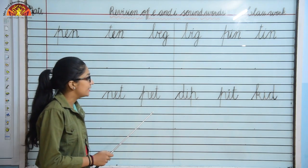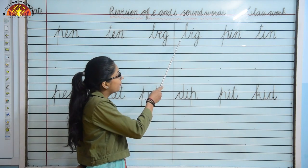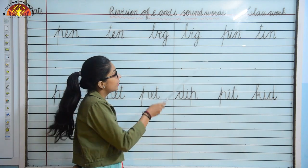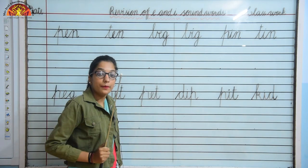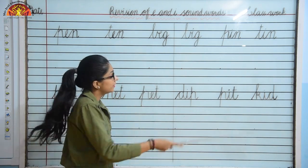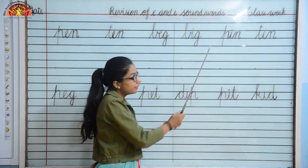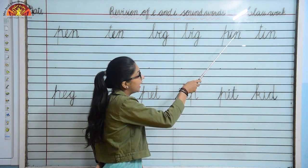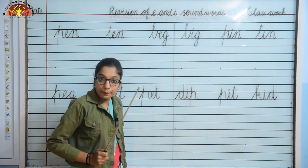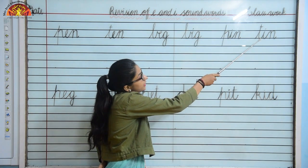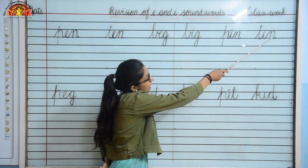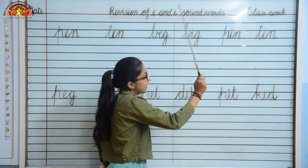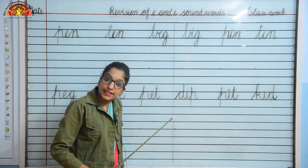Now let's read these words. B, I, G — Big. P, I, N — Pin. P, I, N — Pin. T, I, N — Tin. T, I, N — Tin.